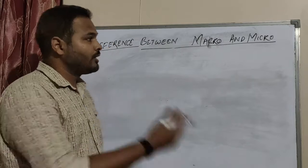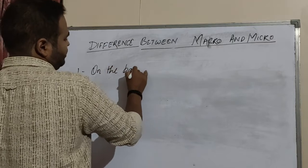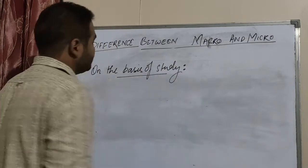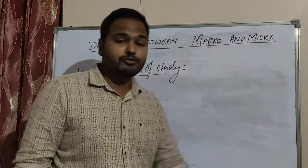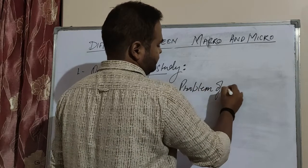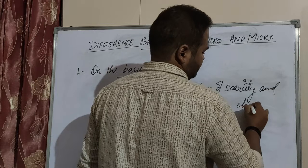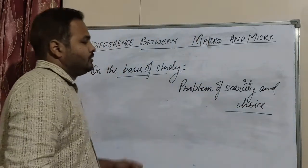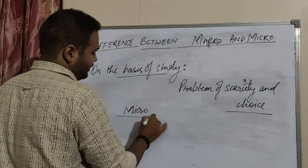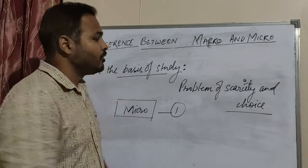So, difference between micro and macro. First difference is on the basis of study — the problem of choice and problem of scarcity. On the basis of study, when we talk about microeconomics at the micro level, we talk about a single person's problem or a single individual's problem of scarcity and choice.